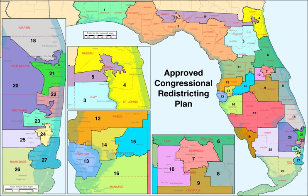Following the 1870 census, Florida was reapportioned a second seat, expanding from one to two seats from 1873 to 1903. Following the 1900 census, Florida gained another seat in reapportionment, bringing the total to three seats from 1903 to 1913.